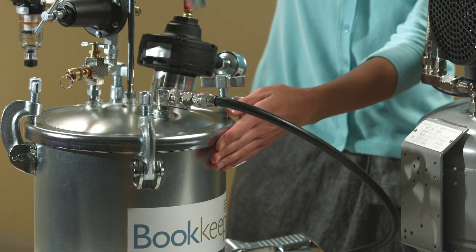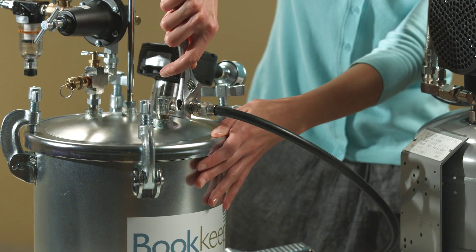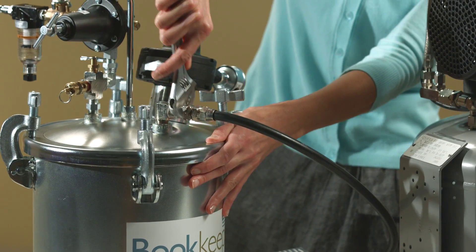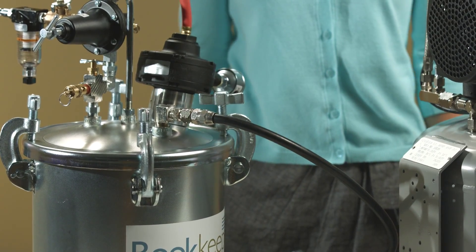Connect the spray gun to the pressure tank. Fasten the nut securely using an adjustable wrench. The spray gun does not need to be disconnected between uses.